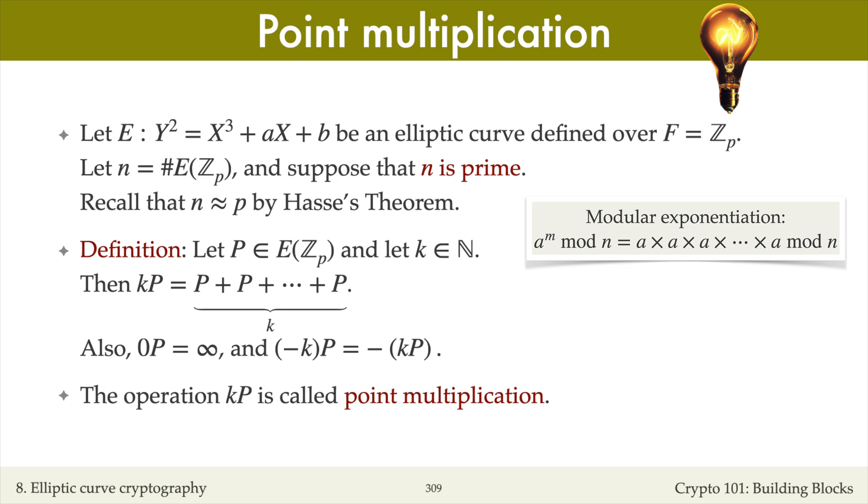On the other hand, point multiplication is the evaluation of P plus P plus P dot dot dot plus P, where there are k copies of P.